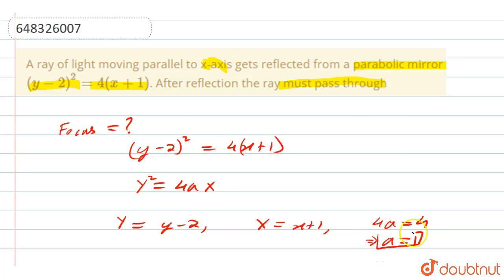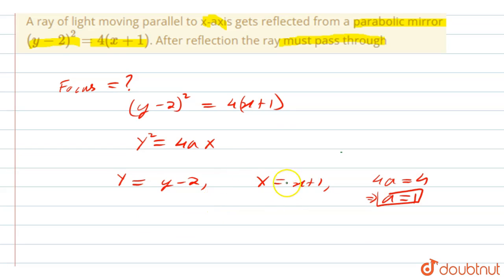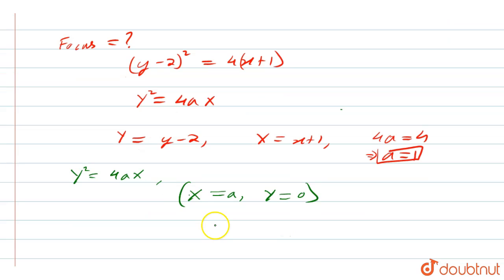Now we got a = 1, Y = y - 2, and X = x + 1. Now we know the focus of parabola Y² = 4aX is given by X = a and Y = 0. So this is our focus.